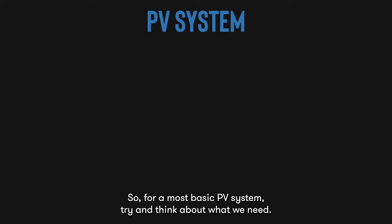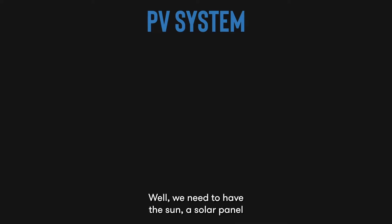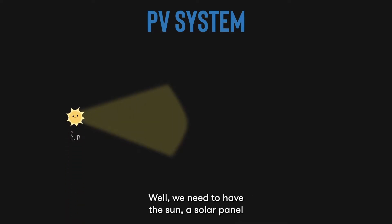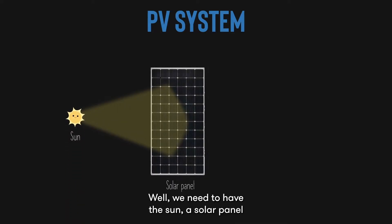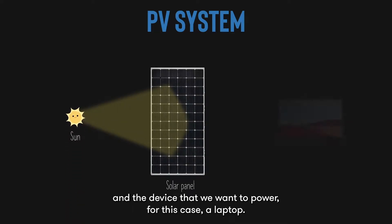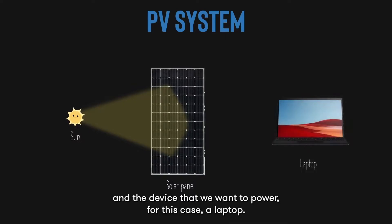For a most basic PV system, think about what we need. Well, we need to have the sun, a solar panel, and the device that we want to power — for this case a laptop — and a wire of course.